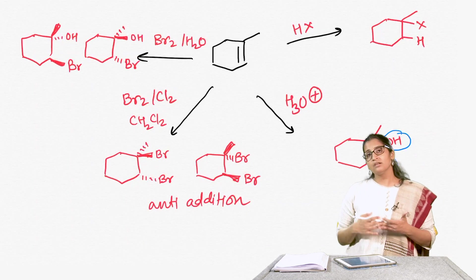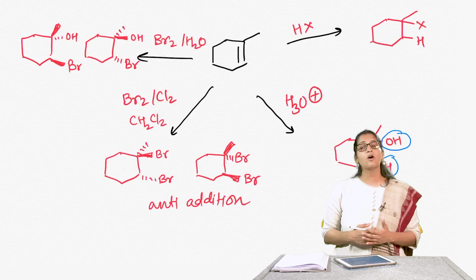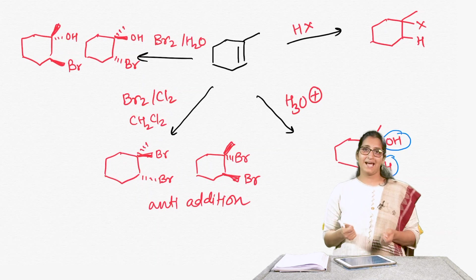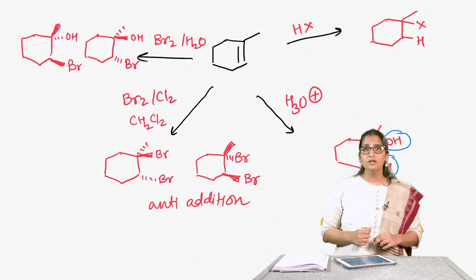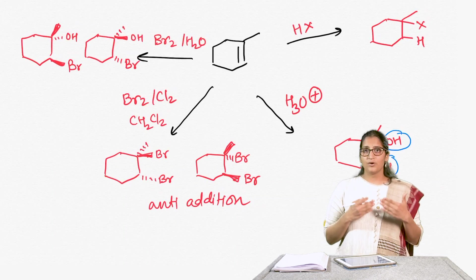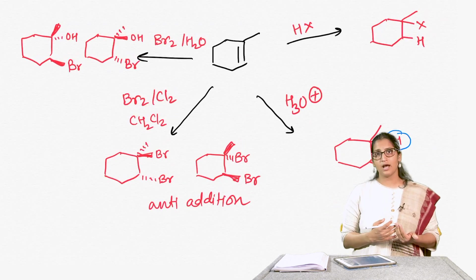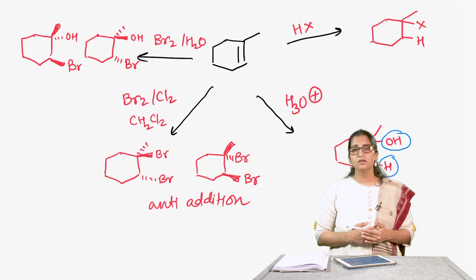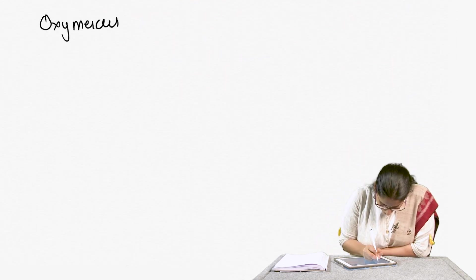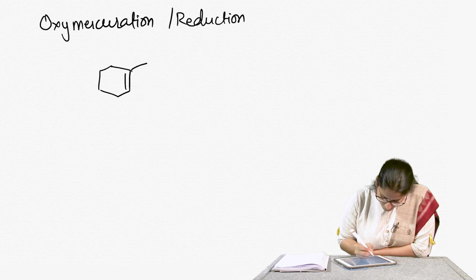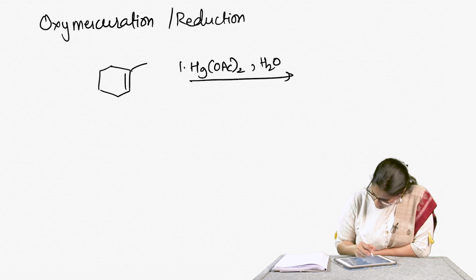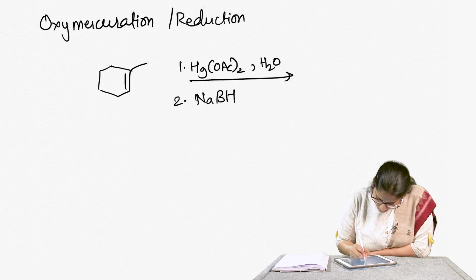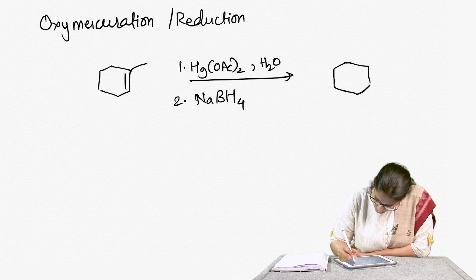One way to convert alkenes to alcohols in the lab is oxymercuration followed by reduction. I won't go over the full mechanism, but you can imagine it also goes through a triangular intermediate. In an oxymercuration-reduction reaction, OH ends up on the more substituted carbon and hydrogen on the less substituted carbon.